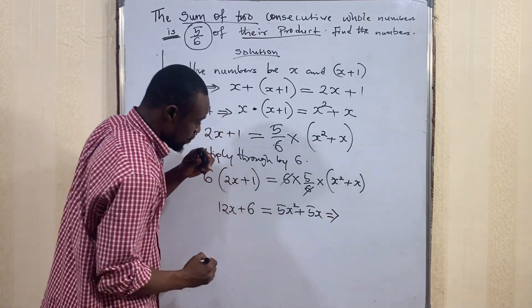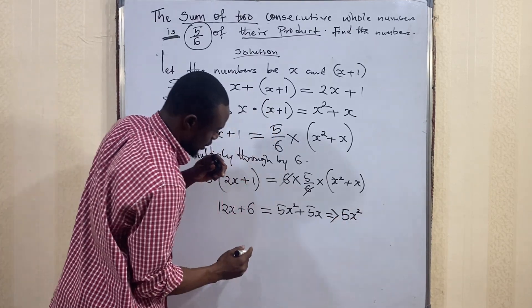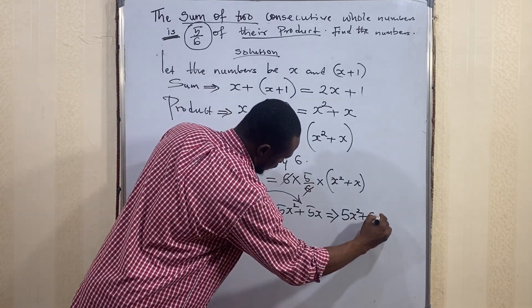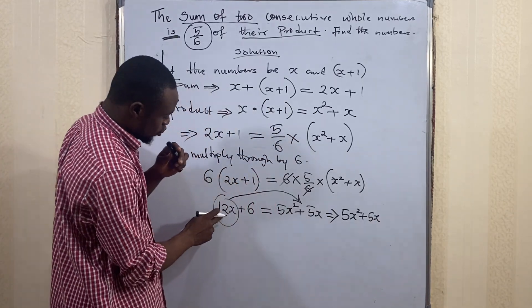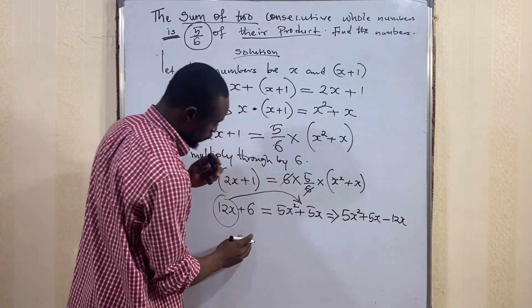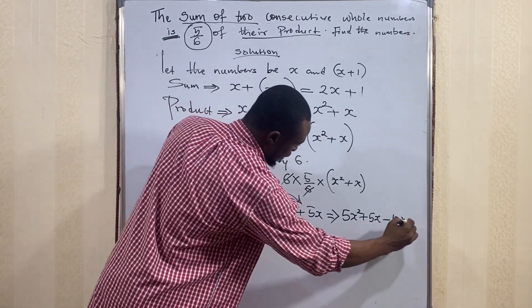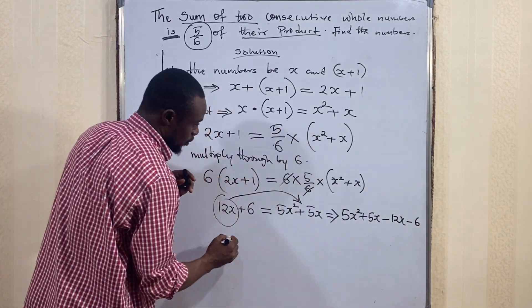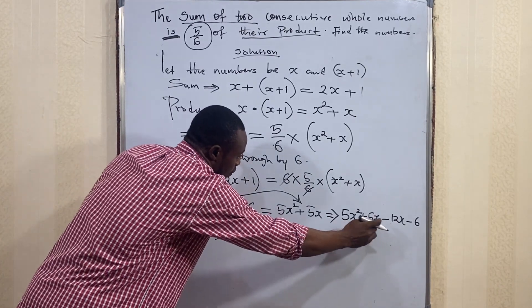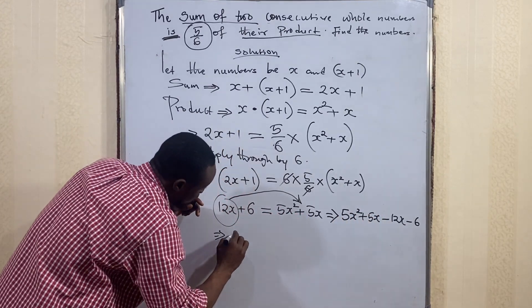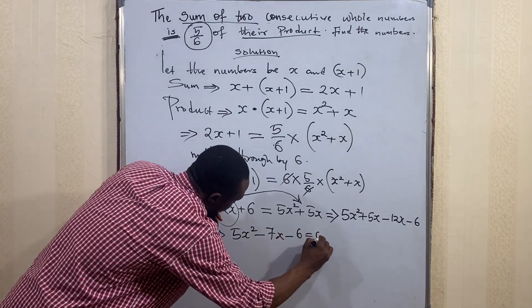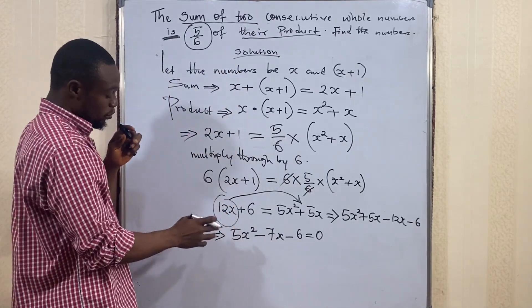Rearranging everything to one side: we bring 5x² and 5x to the left, and 12x and 6 cross the equality sign becoming negative. So we have 5x² + 5x − 12x − 6 = 0, which simplifies to 5x² − 7x − 6 = 0. This is our quadratic equation.